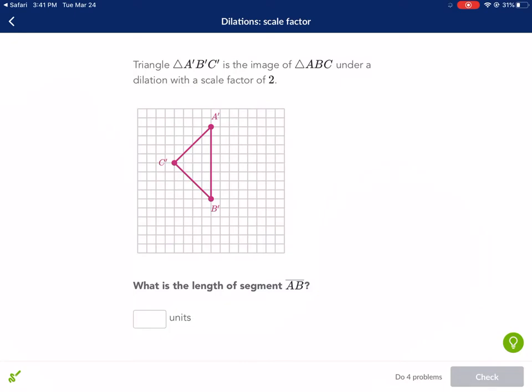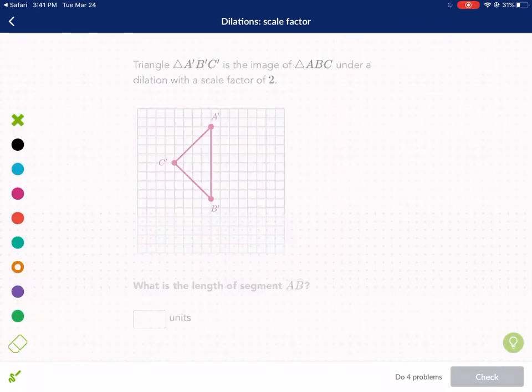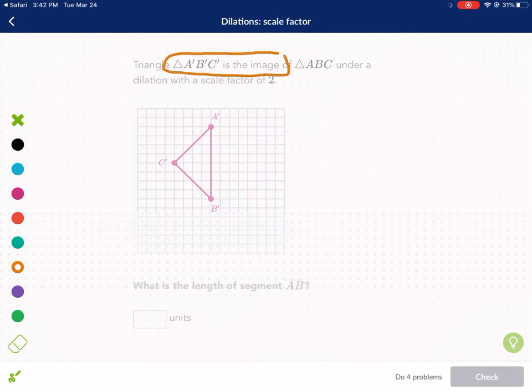This first problem says triangle A'B'C' is the image of triangle ABC under a dilation with a scale factor of 2. What is the length of segment AB? So before we get started, let's identify some key pieces of information. The first thing that we want to see is triangle A'B'C' is the image. Well, what does that tell us about triangle ABC? That that is the pre-image.